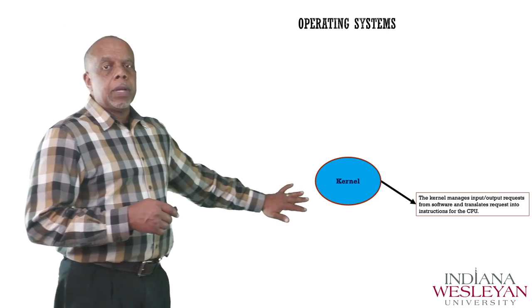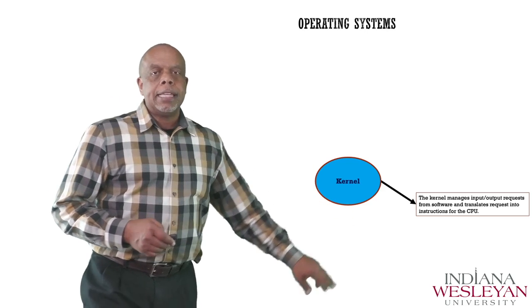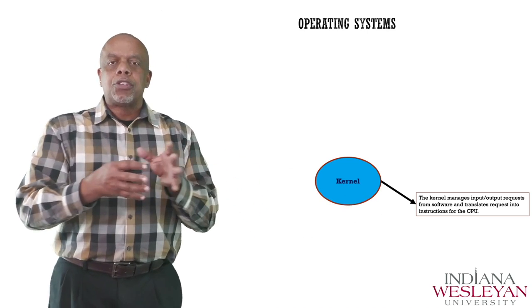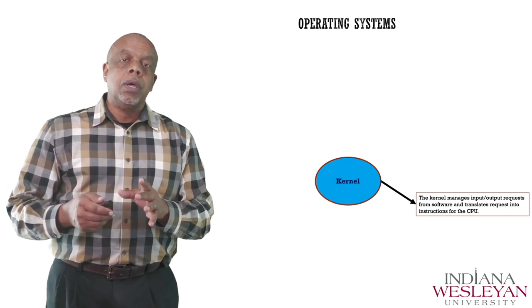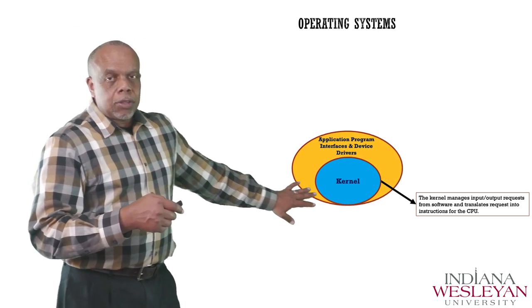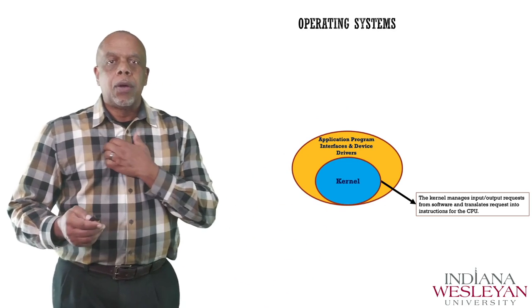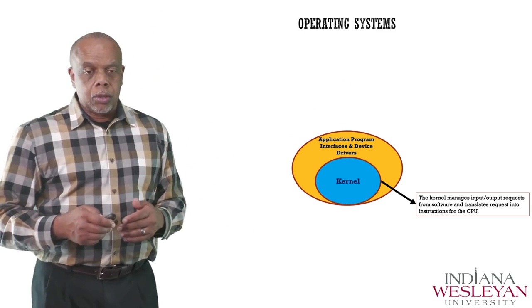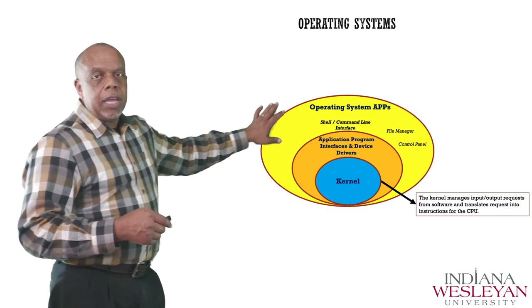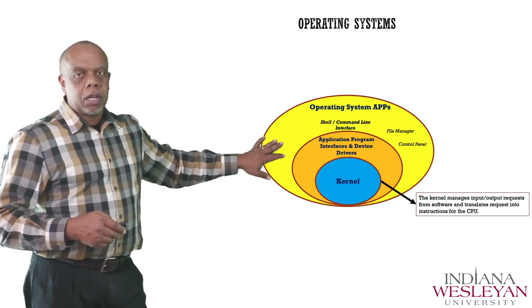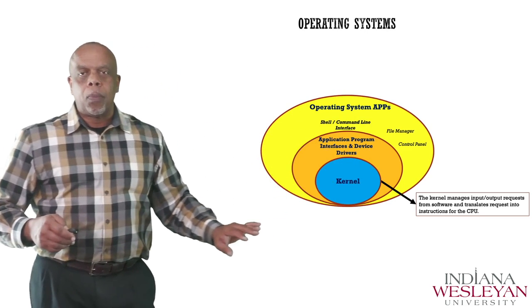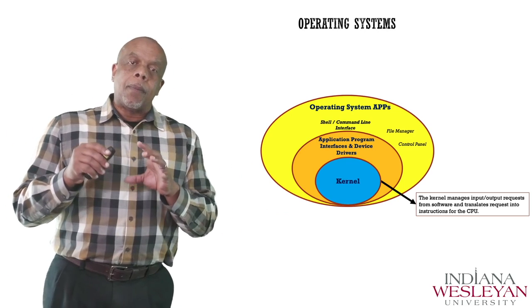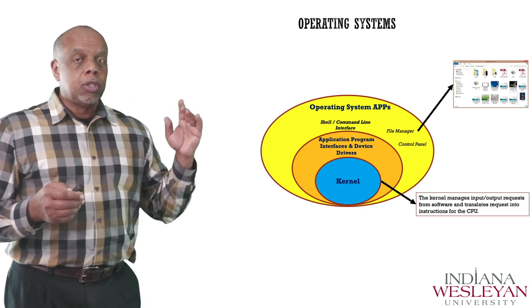At the heart of any operating system is the kernel. What that kernel does is it manages your input/output requests from software. It translates those into instructions that your CPU can understand and process. On the outside of that kernel, that's where we have APIs or device drivers. What this does is it allows the kernel to be able to talk to higher-level applications and user applications. On top of that, we have operating system applications — things like file manager, control panel, print screen, device setup, and all those different things. Those are operating system applications, not to be confused with user applications.